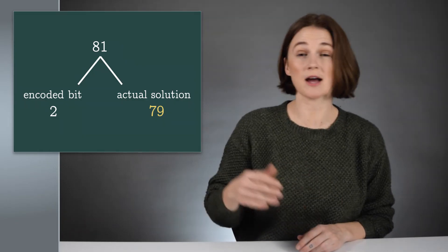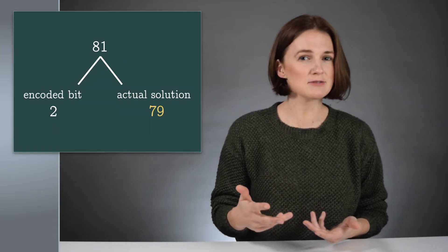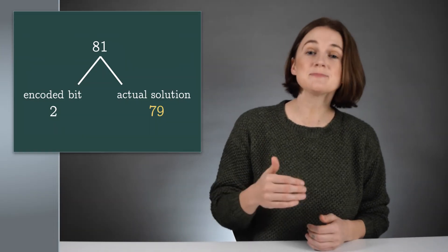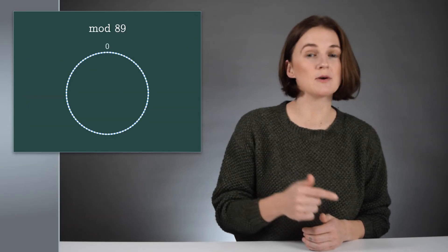Remember, the encoded bit should be either zero or 44. But we got two. Not exactly zero, but it's pretty close. That's because there's still an error in there. That's why we encoded zero as zero and one as 44.